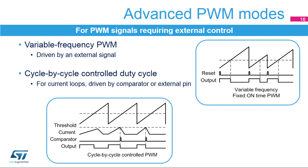This slide presents some more specific PWM modes, where either the frequency or the duty cycle can be driven by external signals. The timer can provide variable frequency signals using an external reset signal connected either on the ETR or on the channel 1 or 2 inputs. The purpose of this mode is to provide a signal with a fixed on or off time and a continuously adjusted frequency controlled by hardware.